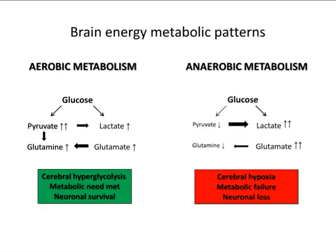There are two main energy metabolic patterns. In aerobic metabolism, glucose converts to pyruvate then to lactate, with elevation in glutamate paralleled by elevation in glutamine — a cerebral hyperglycolysis pattern where metabolic need is met and there is neuronal survival. In anaerobic metabolism, lactate is in excess, glutamate is in excess, without the ability to produce glutamine and pyruvate in parallel — a cerebral hypoxic pattern with metabolic failure and neuronal loss. These two patterns, and the substrates lactate and glutamine, are very important in clinical practice.